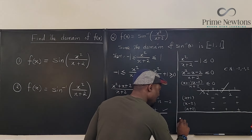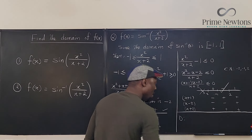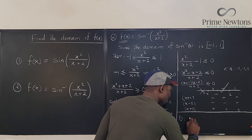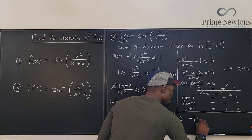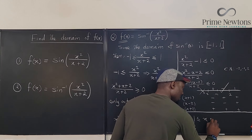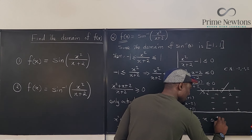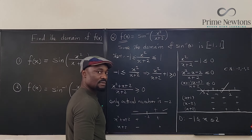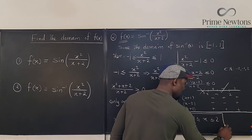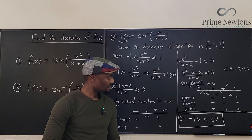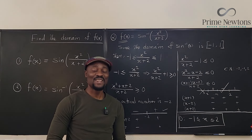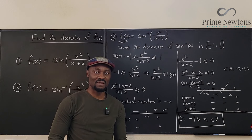So we can clearly say the domain of the function we're dealing with is all values from negative 1, including negative 1, to 2. Never stop learning — those who stop learning, stop living. Bye-bye.